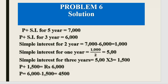We need to find the simple interest for 2 years. Subtracting: 7,000 minus 6,000 = Rs. 1,000. So the simple interest for 2 years is Rs. 1,000.